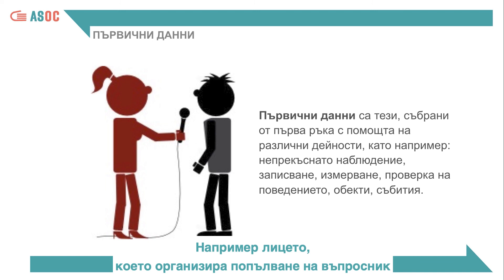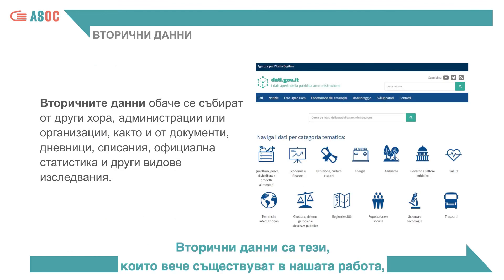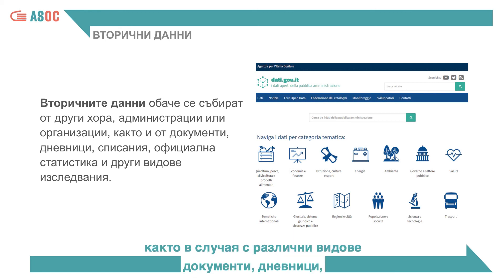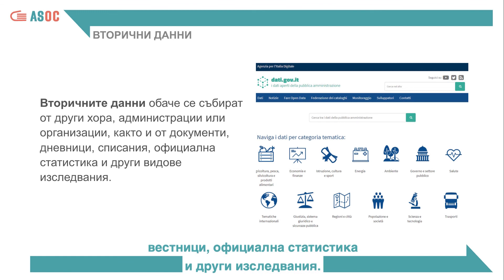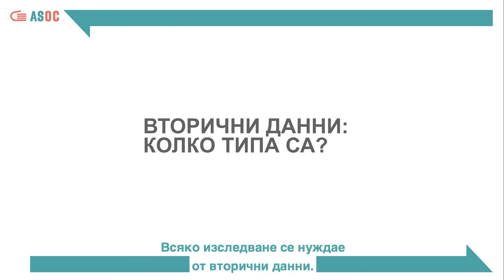The person who organises a survey or an interview, for example, produces primary data. Secondary data are already available before we begin our study, that is, already collected by other people, organisations or governments, as in the case of various types of documents, diaries, newspapers, official statistics and other research studies. This category also includes open data, published by governments and statistical data.